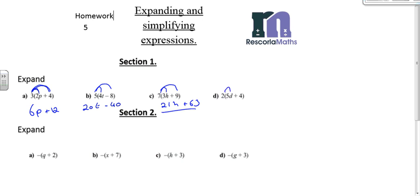Next: 2 lots of 5d is going to be 10d. 2 lots of 4 is going to be 8. Next, we had to get used to multiplying with a negative sign. So minus times q is going to be minus q. Minus times 2 is going to be minus 2. Minus times x is going to be minus x. Minus times 7 is going to be minus 7.